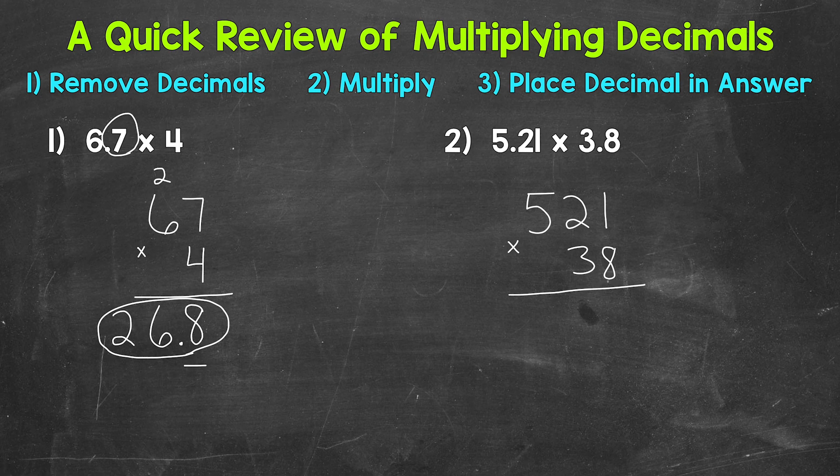So 8 times 1 is 8. 8 times 2 is 16. Put our 6, carry the 1, and then 8 times 5 is 40 plus that 1 is 41. So we are done with the 8 and we are done with this carried 1.